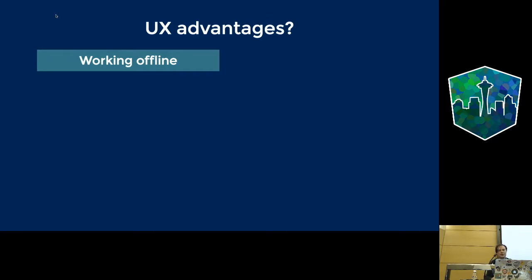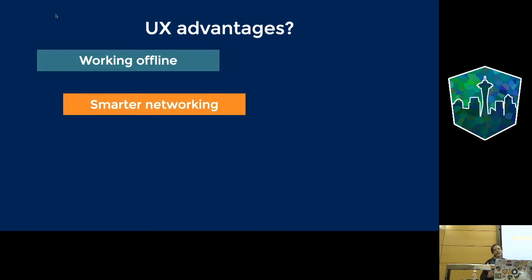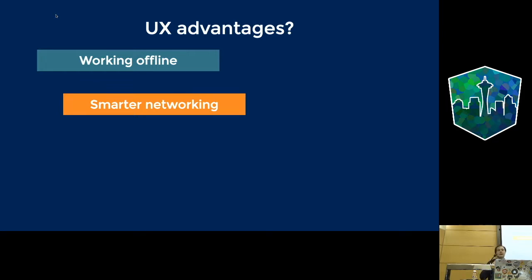Why do we need this in terms of user advantages? Everything connected with networking: working offline and optimizing lots of things online. This makes us think about the web as something not tied to online anymore. Web is now a full-scale platform to create apps — why not use all the power of JavaScript and modern browser APIs?